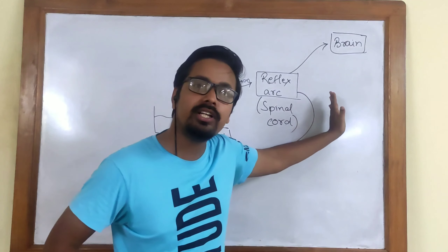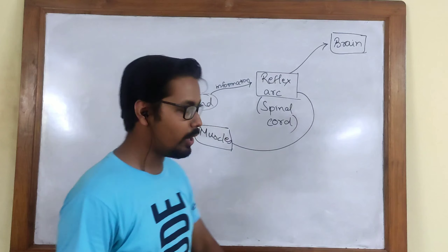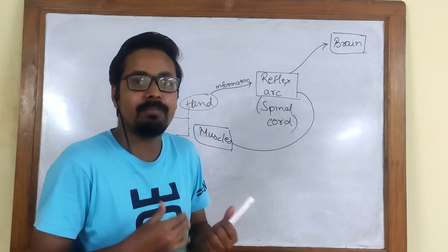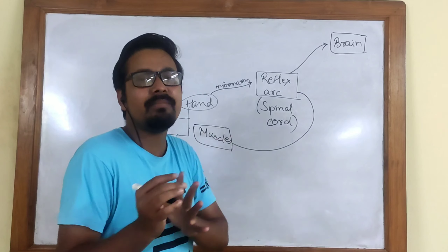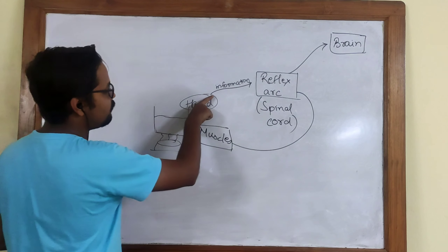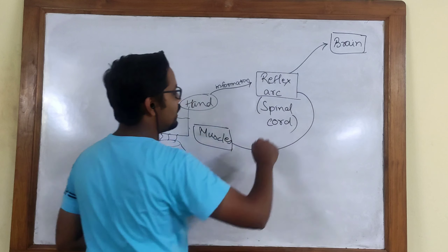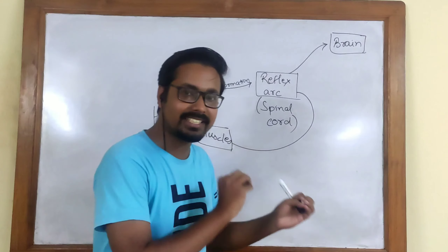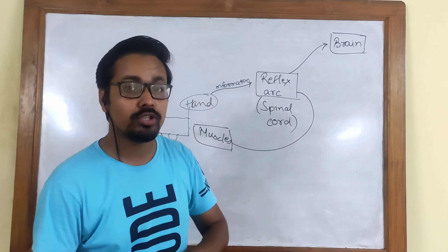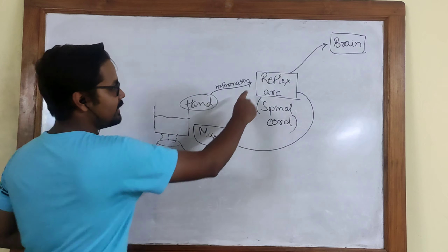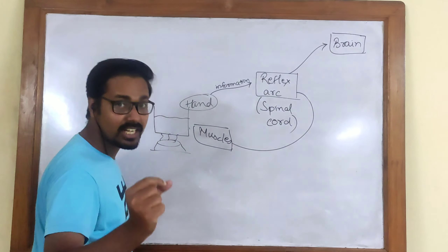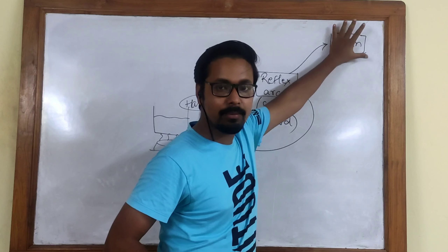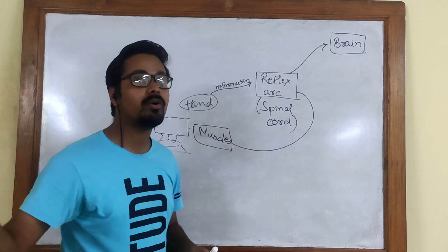What is the function of the brain here? It will only store the information. Whenever something very extreme happens — something very painful or very hot — the information moves to the reflex arc and then to the brain. But before even reaching the brain, the reflex arc processes the information, determines that something extreme has happened and fast action is needed, and directly instructs the muscles to remove the hand. By the time the information reaches the brain, we have already removed our hand.